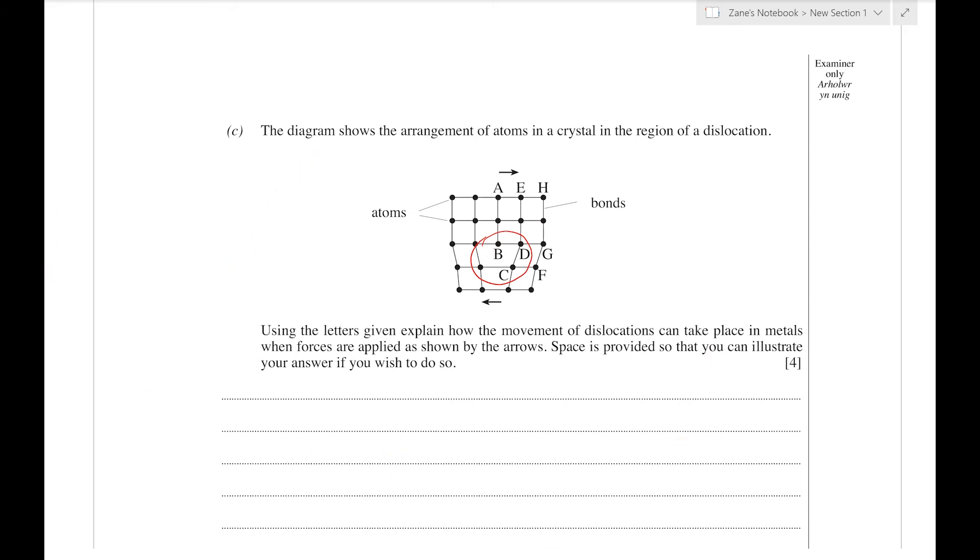We've got a complete plane of atoms from this one down to this one. We've got another complete plane here, but this plane from A to B—well, once we reach B, all of a sudden there's a gap. That's what our dislocation is. We've got to use the letters given to explain how movement of dislocation takes place in metals when forces are applied as shown.